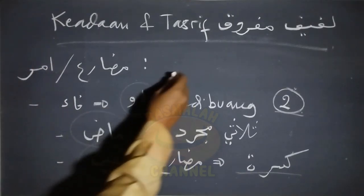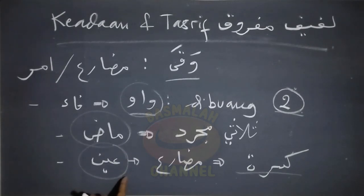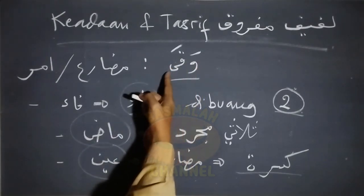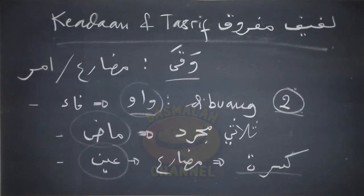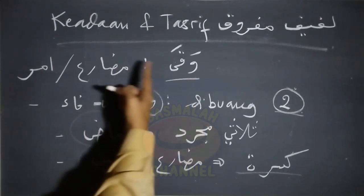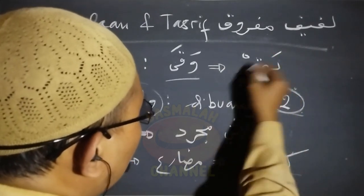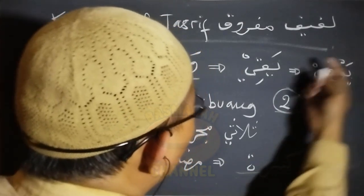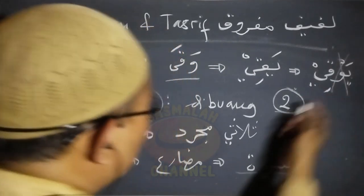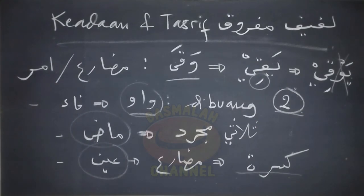Manakala tidak memenuhi kedua syarat itu maka waw di sini tidak dibuang. Syarat tersebut adalah bentuk fi'il madinya termasuk di dalam kategori sulasi mujarrad, kemudian yang kedua ketika berbentuk fi'il mudhari', ain fi'ilnya berharkat kasrah. Lafad yang memenuhi syarat di sini contohnya seperti lafad waqo. Lafad waqo ini sudah memenuhi kedua syarat itu, di mana pada bentuk fi'il madhi, lafad waqo masuk di dalam kategori tulasi mujarrad, dan ain fi'il ketika berbentuk fi'il mudhari' berharkat kasrah. Dengan demikian huruf waw yang ada pada fa'fi'ilnya di sini dibuang, sehingga waqo menjadi yaqi.